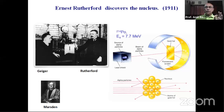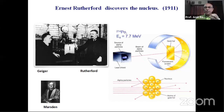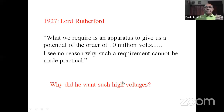Once Rutherford discovered the nucleus, he wanted to study what was inside it. He said in 1927: 'What we require is an apparatus to give us a potential of the order of 10 million volts. I see no reason why such a requirement cannot be made practical.' But why did he want such high voltages? Think about it — can any student write the answer on the chat screen? I will give you one minute.